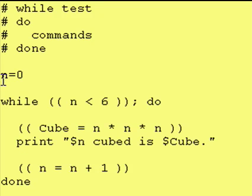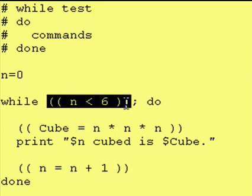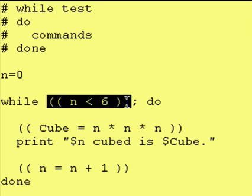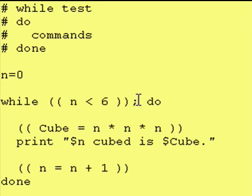So what we start out with is we're going to assign a value of 0 to the variable n. And then we're going to do this test right here. And by the way, you can do a mathematical test, a string test, or a file test. Those are all perfectly okay within this while test condition. So we're going to ask, is n less than 6? If it's less than 6, then we go from the do to the done section.